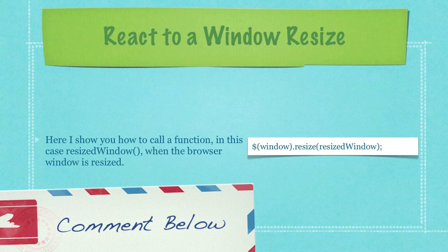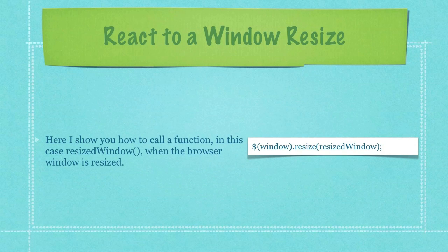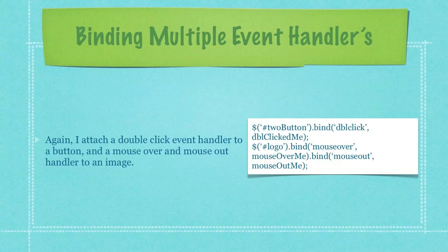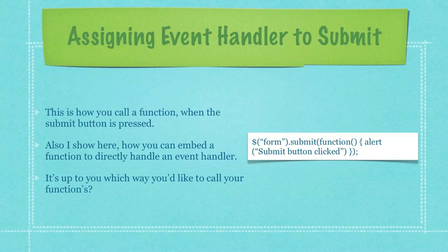Here, I show you how to call a function — in this case resized_window — when the browser window is resized. Again, I attach a double-click event handler to a button, and a mouse over and mouse out handler to an image. This is how you call a function when the submit button is pressed. Also, I show here how you can embed a function to directly handle an event handler, and it's up to you which way you'd like to call your functions.